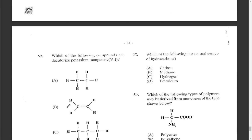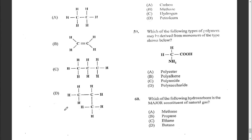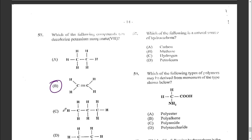Question fifty-seven: which compound can decolorize potassium permanganate? Potassium permanganate is purple, and alkenes react with it and decolorize it, indicating the alkene's presence. If you want to know whether an alkene is present, add potassium permanganate — it decolorizes from purple to colorless.